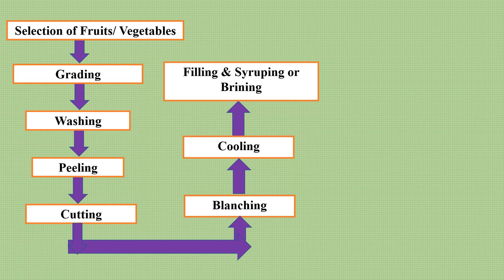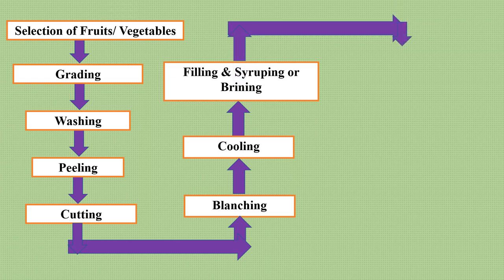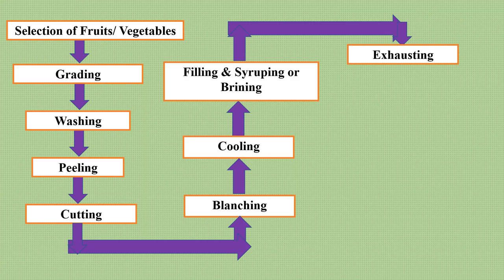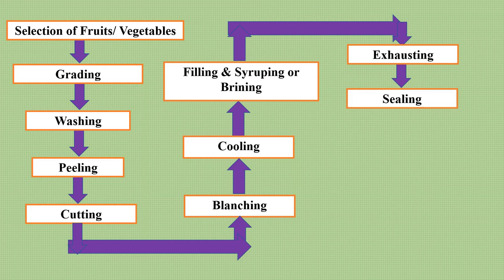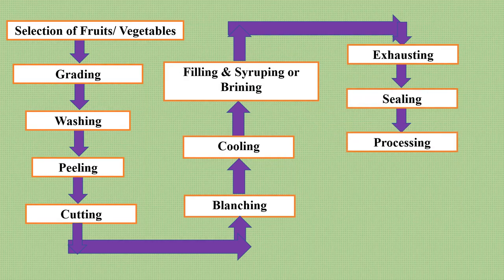In case of fruits, along with the fruit pieces, sugar syrup is filled into the container — this process is known as syruping. While in case of vegetables, along with the vegetable pieces, salt solution is filled into the container — this process is known as brining. After filling, syruping, and brining, exhausting is done. Exhausting is the removal of entrapped oxygen or air from the food pieces and the entire container. After exhausting, the containers are then sealed.